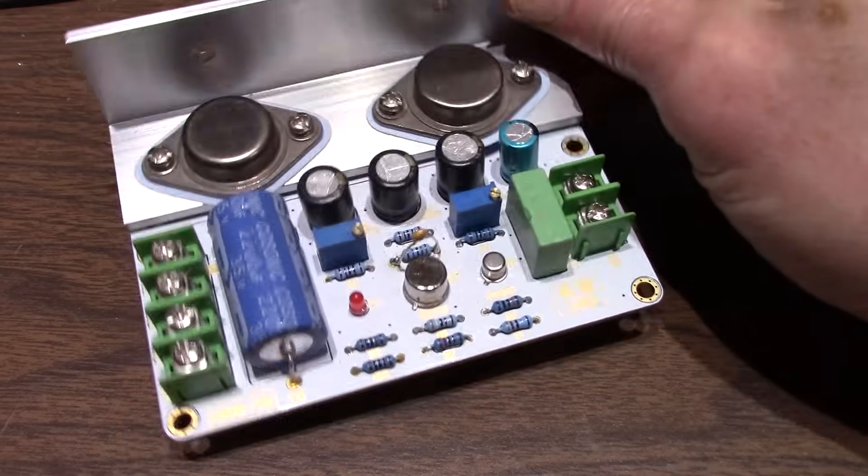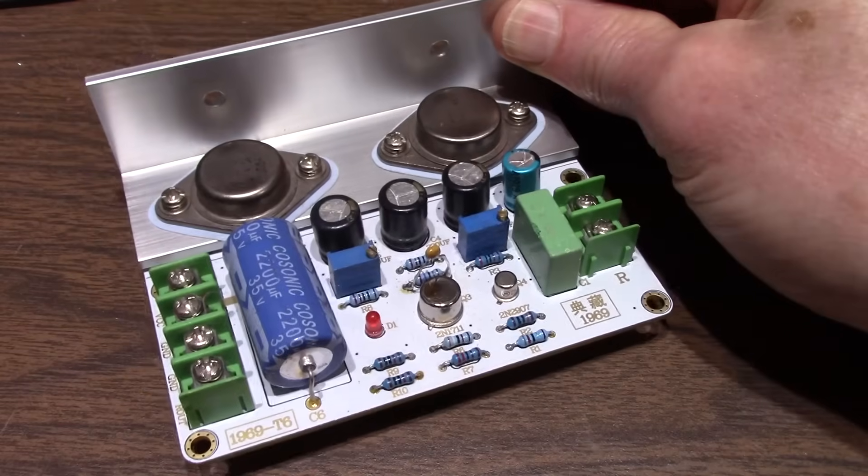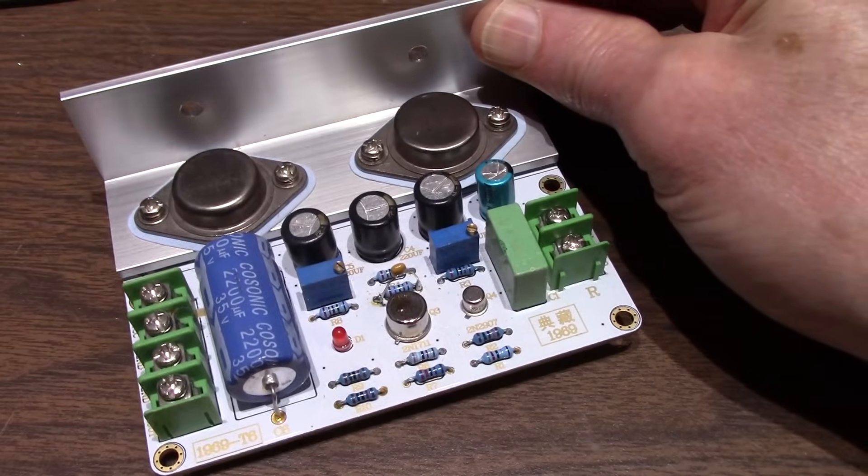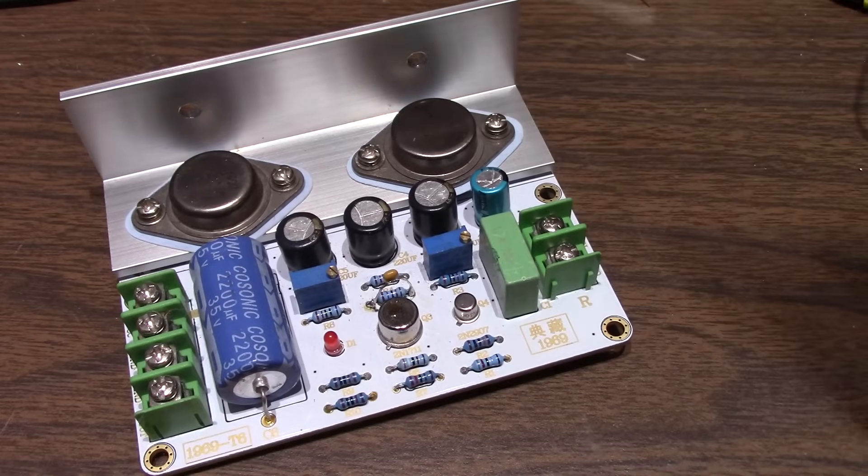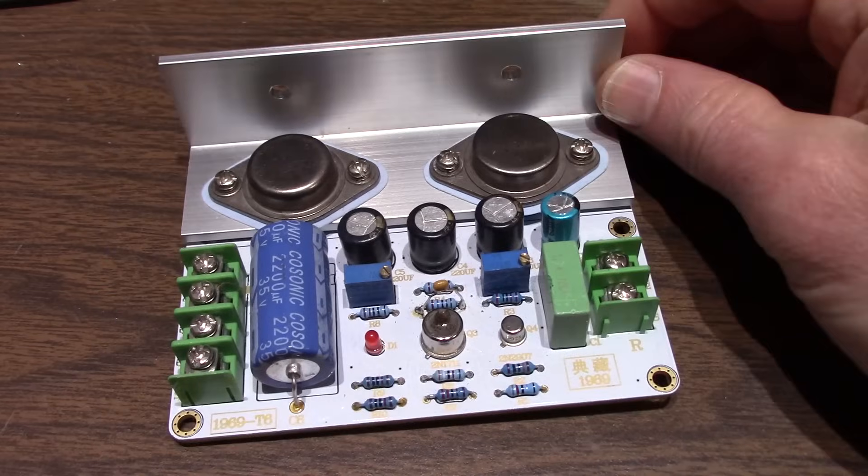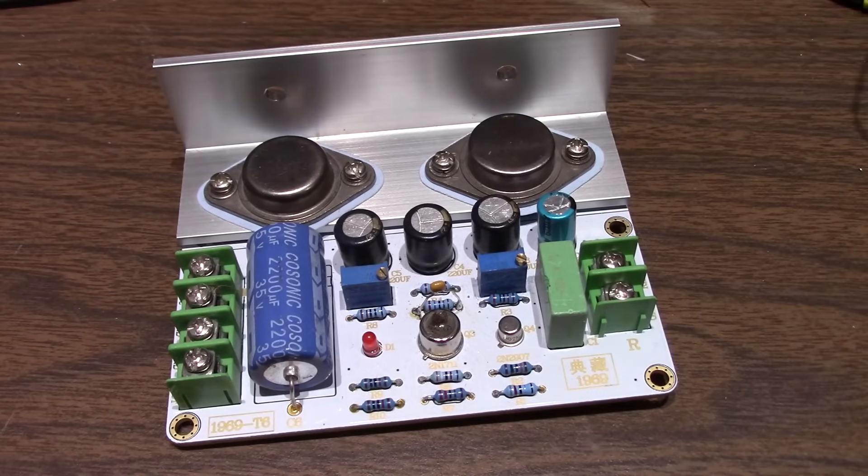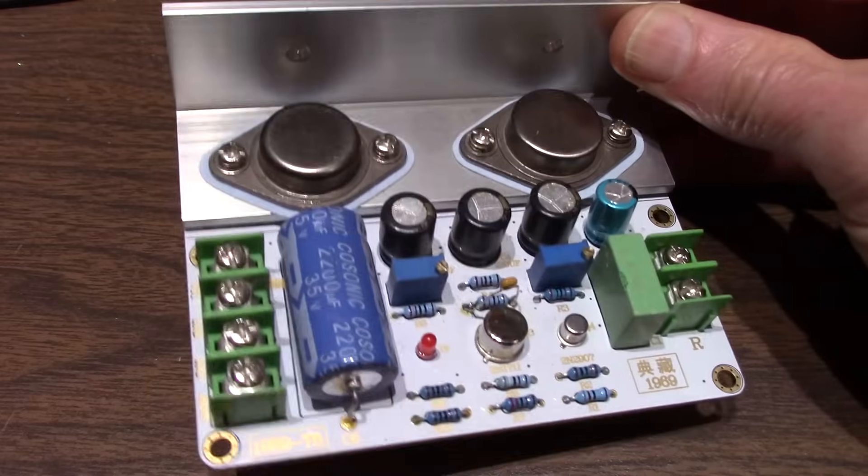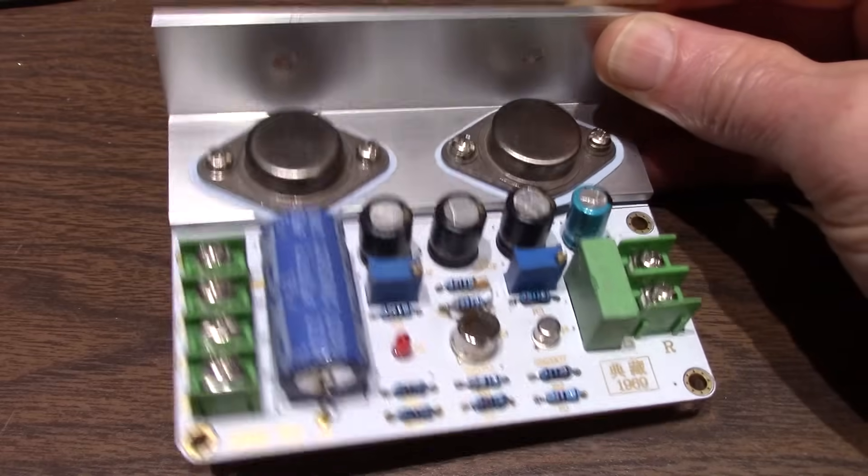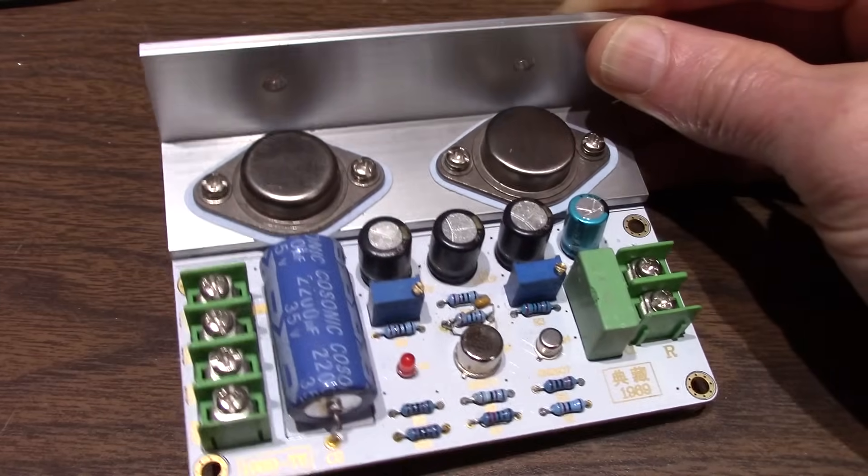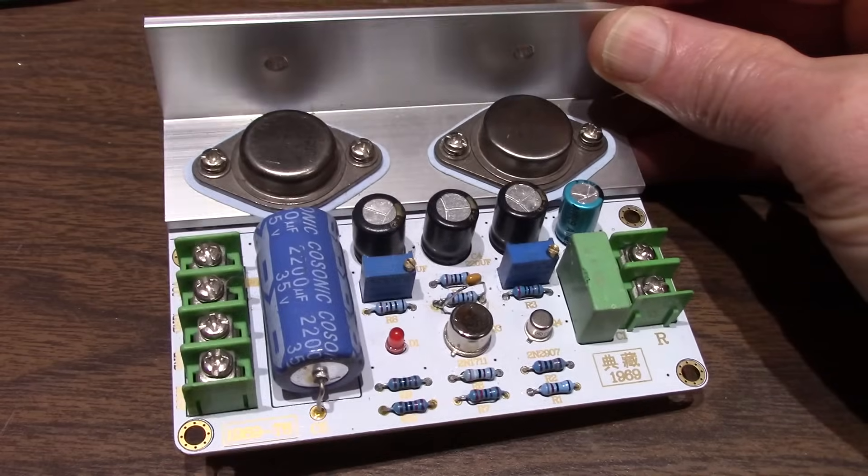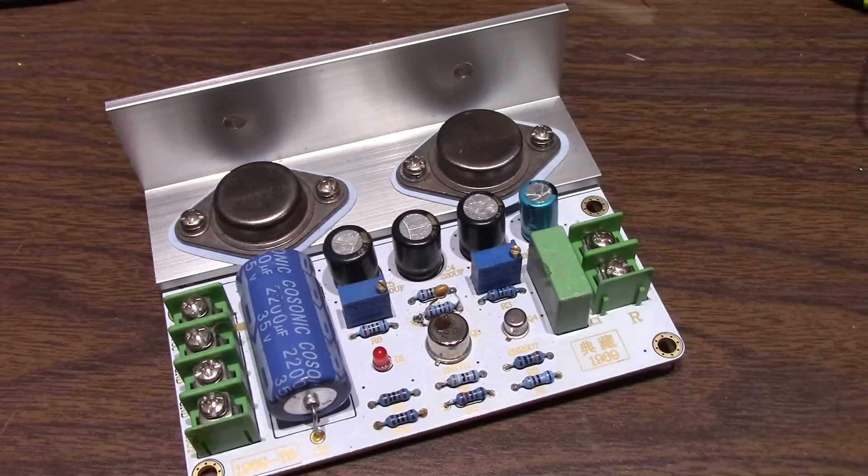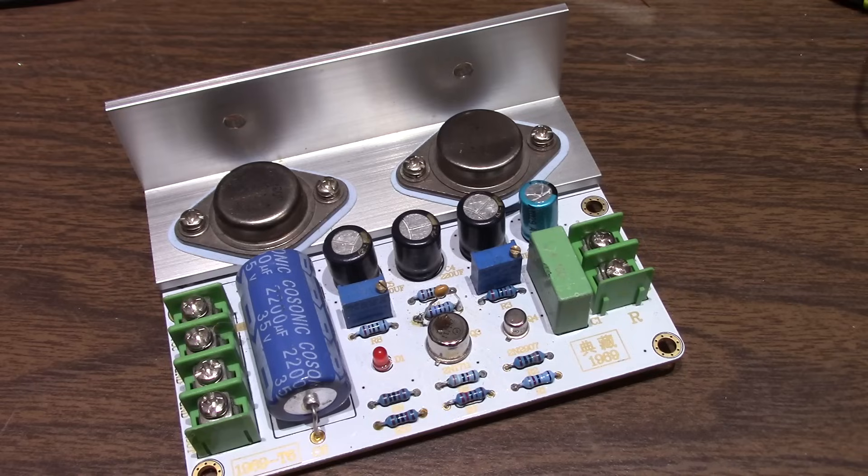But at least now if there is some capacitance on the output such as long speaker leads or something like that it's not going to go into oscillation. I must admit though I'm not a big fan of class A mainly because it just draws so much power. I mean to get that output power of you know eight watts the thing's drawing close to 35 and even sitting idle putting nothing out it's drawing that much power maybe even a bit more.